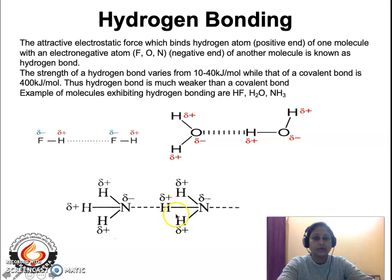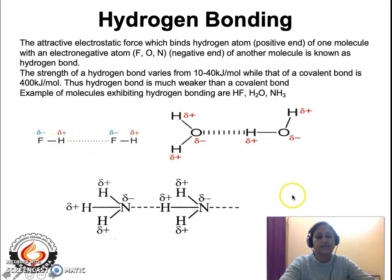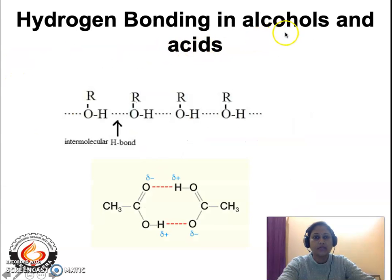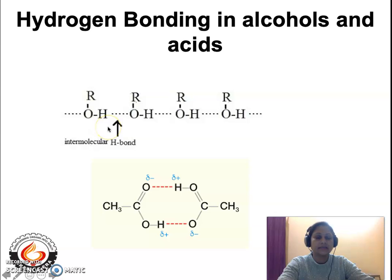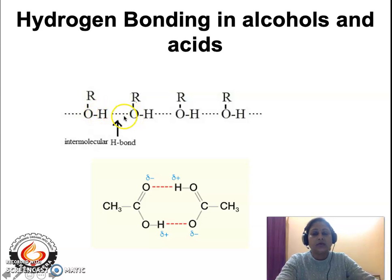Hydrogen bonding can exist between two similar molecules or between two dissimilar molecules, such as ammonia and water, or between one molecule of ethanol and one molecule of water. In alcohols, R represents the alkyl or aryl group and OH is the functional group. O is the electronegative element and hydrogen is the electropositive element. The hydrogen of one alcoholic group will bind to the oxygen of another alcoholic group — this bonding is designated in dotted lines and helps bind two molecules of alcohol.